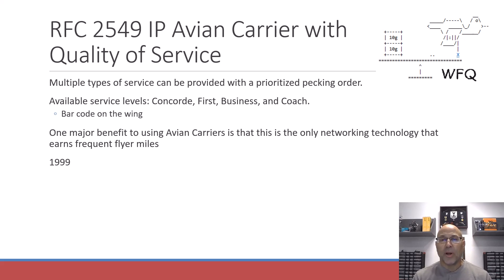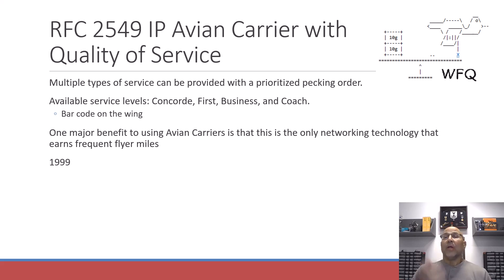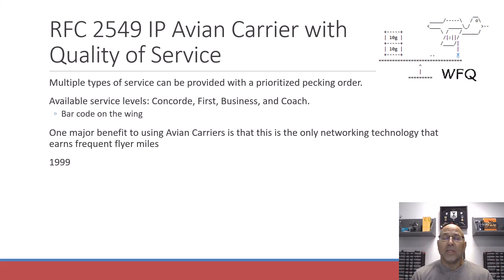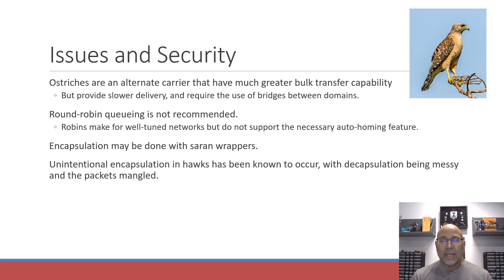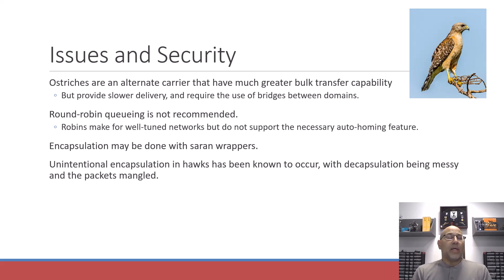We can see an image from the RFC in the upper corner here — a demonstration of weighted fare queuing, where we have our Avian Carrier and then the approximate weight to balance out the scale. This is not to say that Avian Carrier services, as innovative as they might be, don't come with their own issues or security problems.